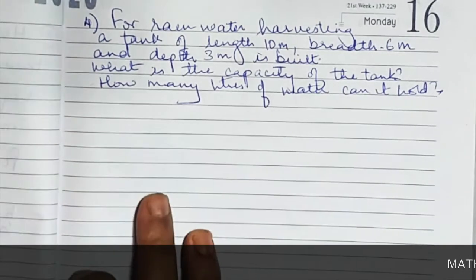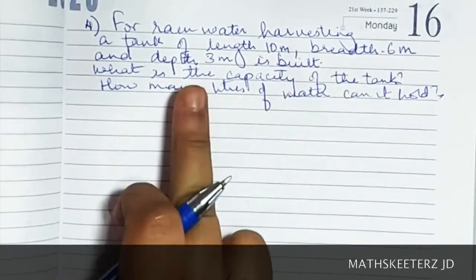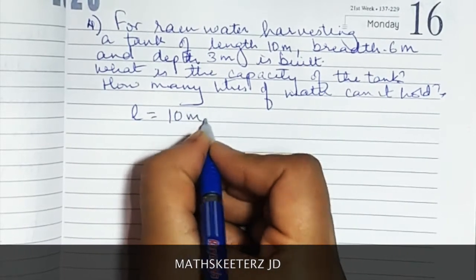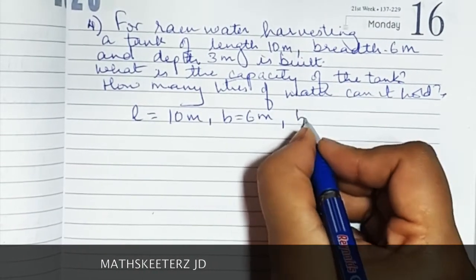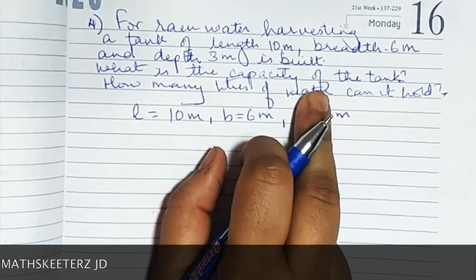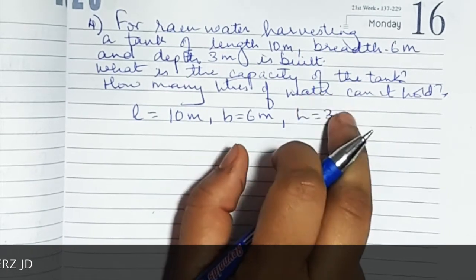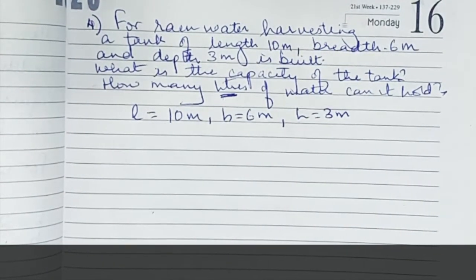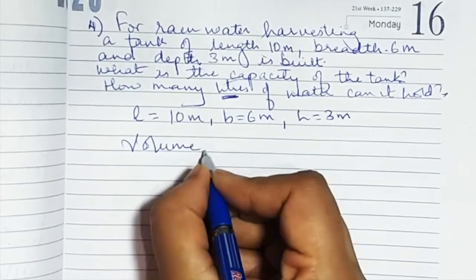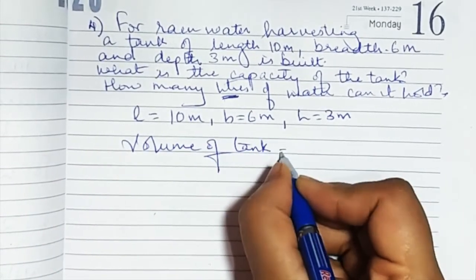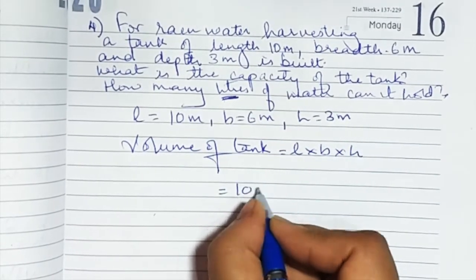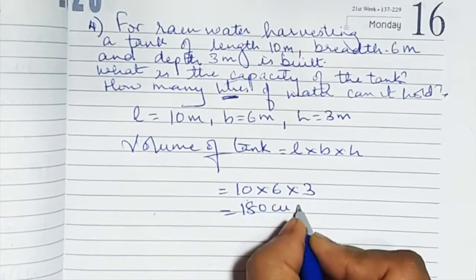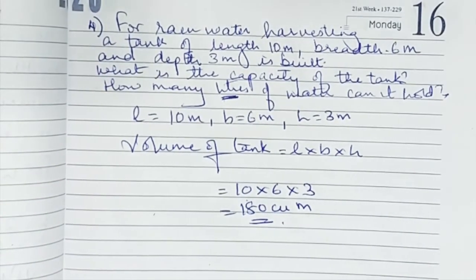The fourth sum: for rainwater harvesting, a tank of length 10 meters, breadth 6 meters, and depth 3 meters is built. Capacity means volume, so let's find the volume first, then convert to liters. Volume of tank = length × breadth × height = 10 × 6 × 3 = 180 cubic meters.